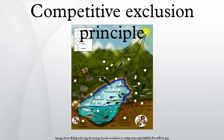Experimental basis: based on field observations, Joseph Grinnell formulated the principle of competitive exclusion in 1904 — two species of approximately the same food habits are not likely to remain long evenly balanced in numbers in the same region. One will crowd out the other.